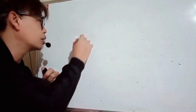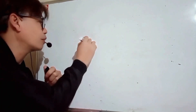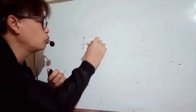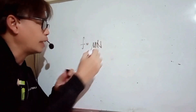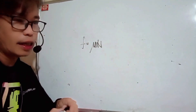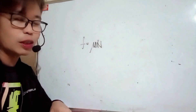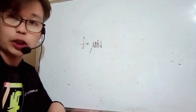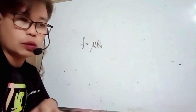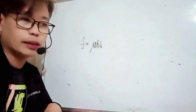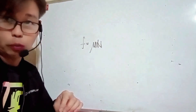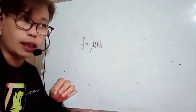It is denoted by the small letter F with the formula mu multiplied by N. Your mu is the coefficient of friction, which basically means the amount of friction between two objects.